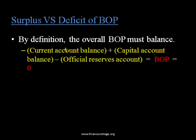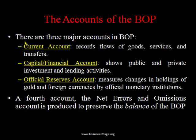Current account may have a surplus or deficit, likewise capital account and official reserves, but as a whole balance of payment is always balanced. When we talk about surplus or deficit of balance of payment, we actually talk about surplus or deficit of the current account. The three major accounts are: current account, capital and financial account, and official reserves account. There is also a fourth account known as net errors and omissions.